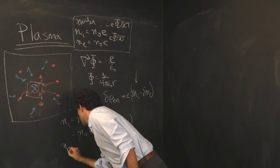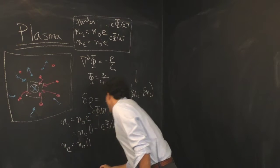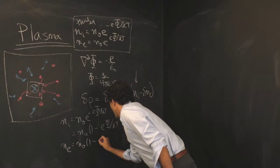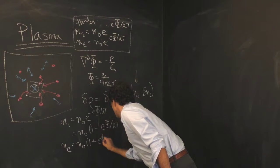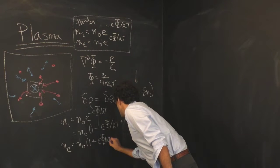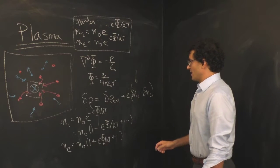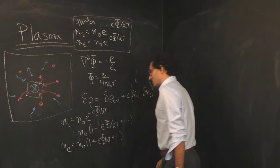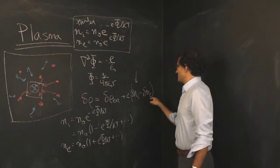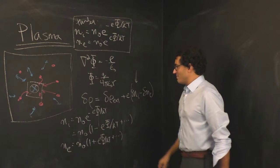Similarly with the electron charge I'm going to write the expansion and now I have 1 plus e phi over kT plus higher order terms. This phi is going to be altered by the introduction of that charge and that's going to lead to this overall imbalance.